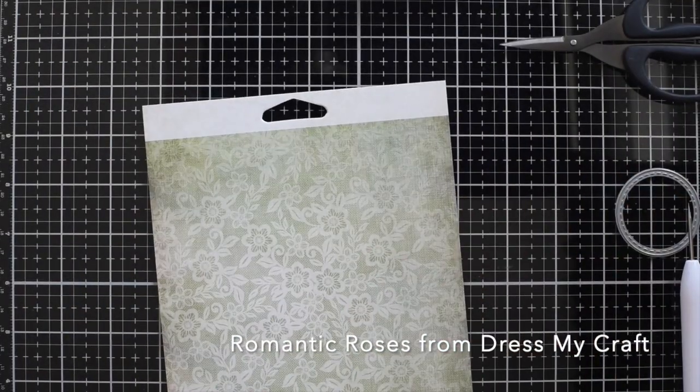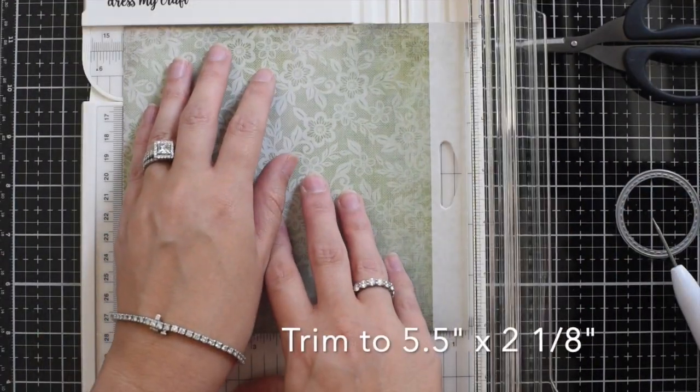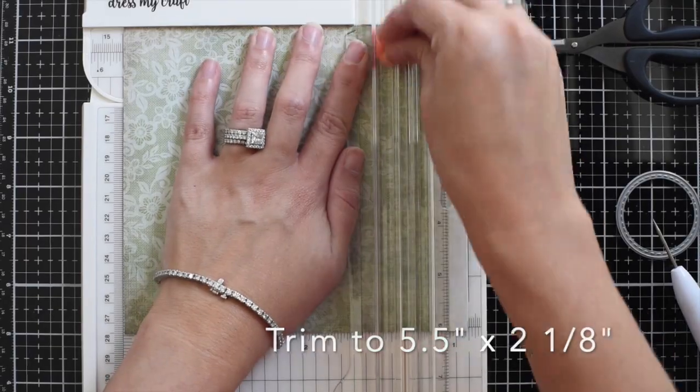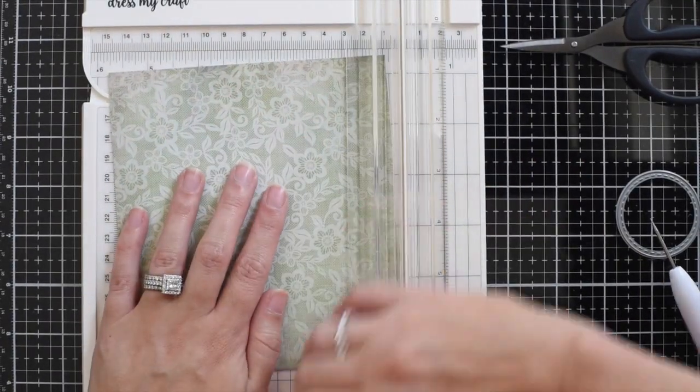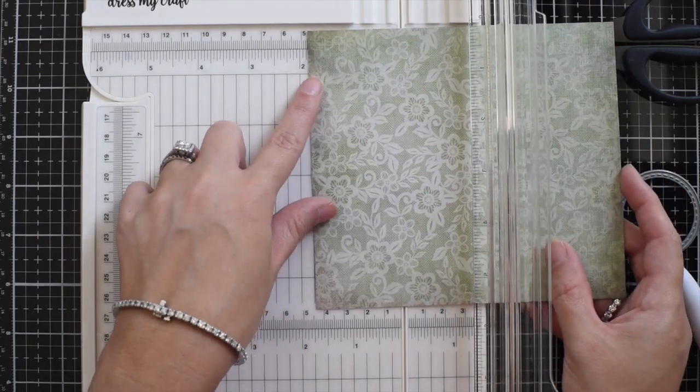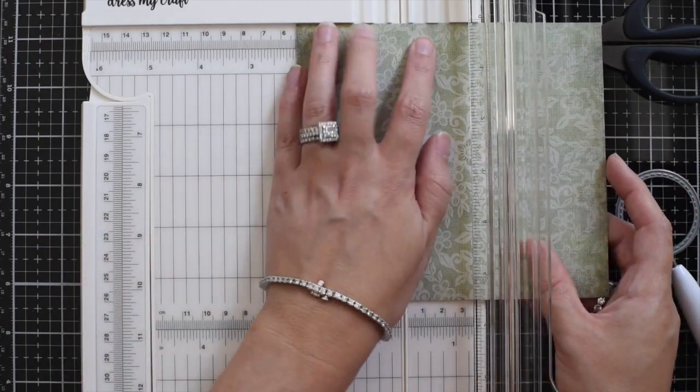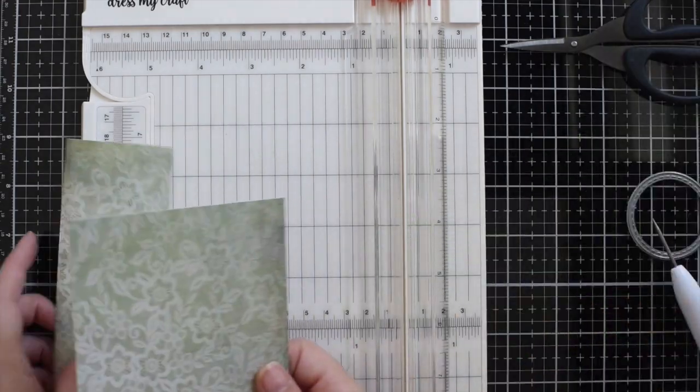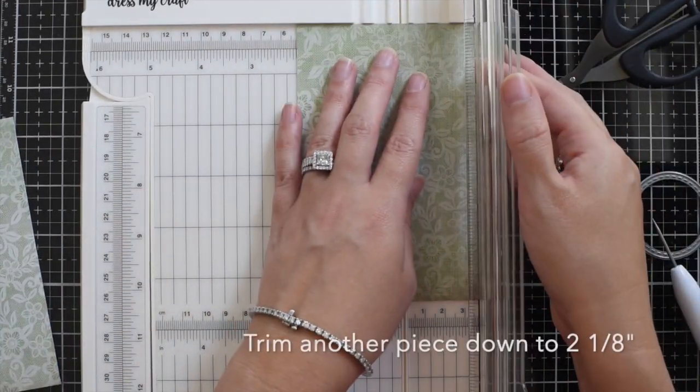I'm going to use this green paper from the Romantic Roses paper pad set and I'm going to cut that down to five and a half by two and one eighth inch. And then I'm going to cut down another piece that's the same size.